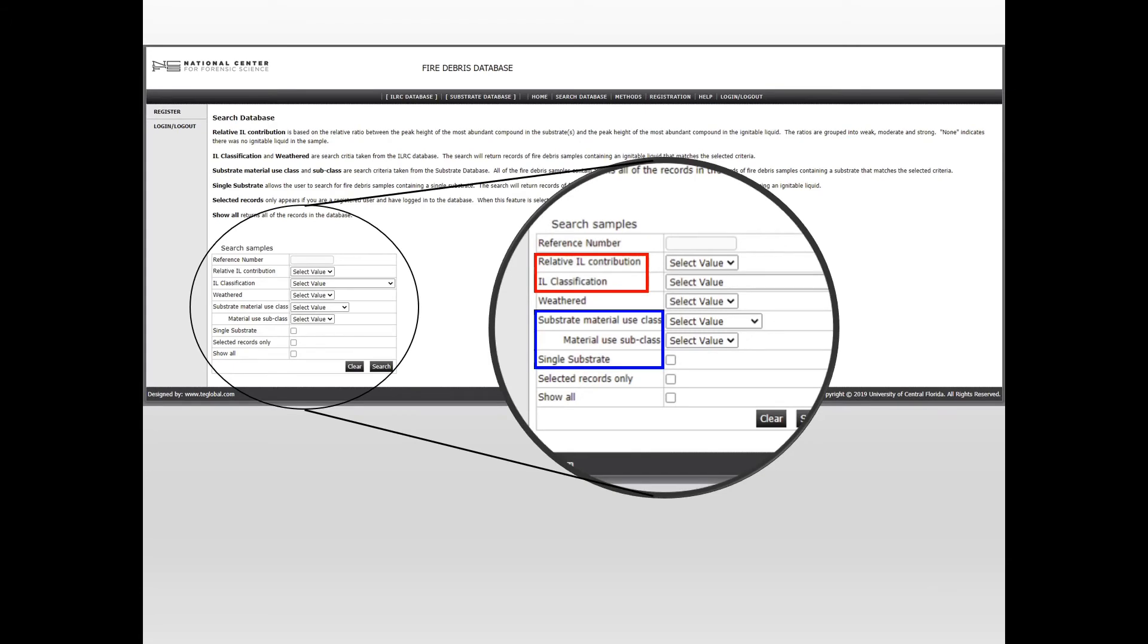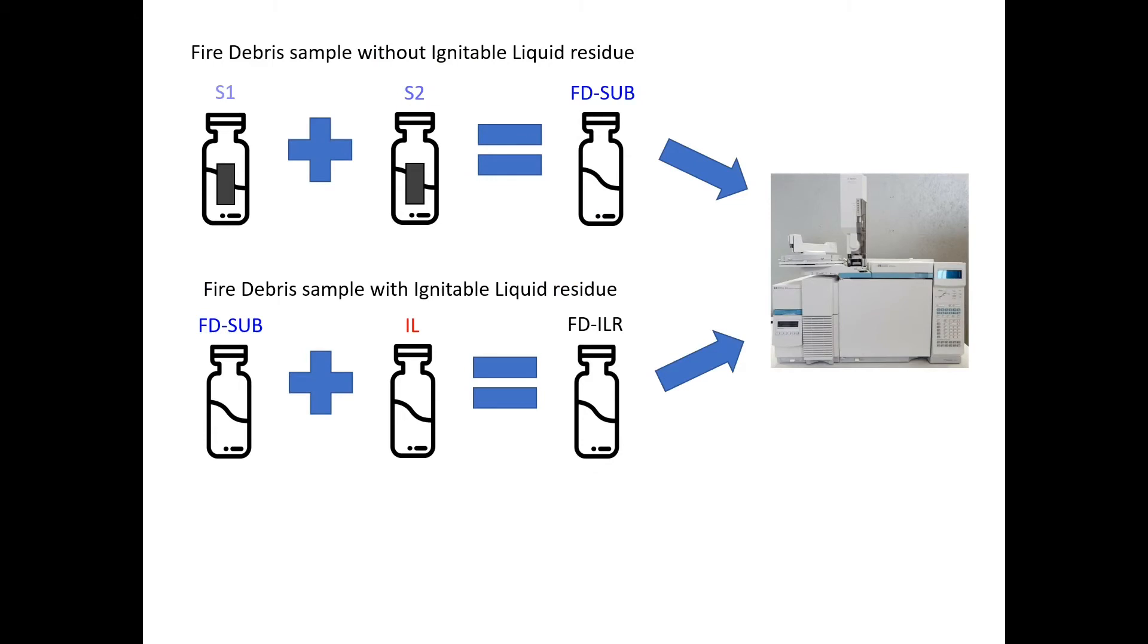As previously mentioned, records in our fire debris database will consist of combined substrate and ignitable liquid samples. Fire debris samples with no ignitable liquid residue are designated as FD-sub and contain one to three substrate solutions. Fire debris samples with an ignitable liquid residue, designated as FD-ILR, contain one to three substrate solutions and one weathered ignitable liquid solution. The fire debris solutions are analyzed utilizing the same GC-MS method as the ignitable liquids.